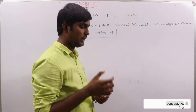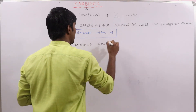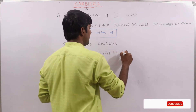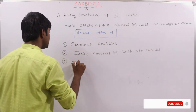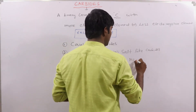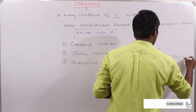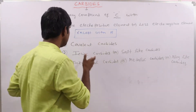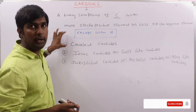Carbides are majorly classified into three classes. The first type is covalent carbides. The second type is ionic carbides, also called salt-like carbides. The third type is interstitial carbides, also called metallic carbides or alloy-like carbides. In this lecture I will explain covalent carbides; in the next lecture we will discuss ionic carbides.